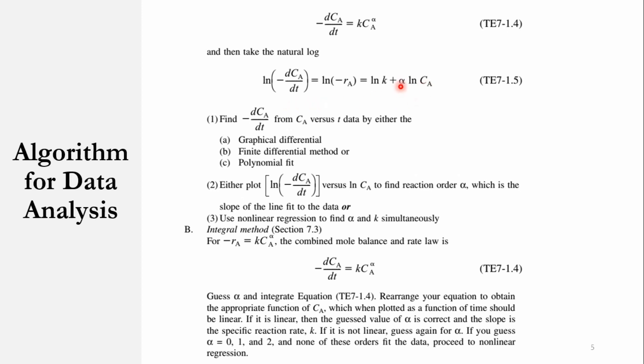So this now becomes Y = MX + C, where Y is natural log of minus dCA/dt, M is alpha, X is natural log of CA, and C is natural log of k. So we can calculate it by the slope method. And it has been said here that you find -dCA/dt from CA versus t by either graphical differential, finite differential, or polynomial fit. And the second part is that you have to draw a plot between these parameters to find reaction order, which is the slope of the line. The third part among this: the differential method would be the nonlinear regression. So we will be doing it in our upcoming lectures.